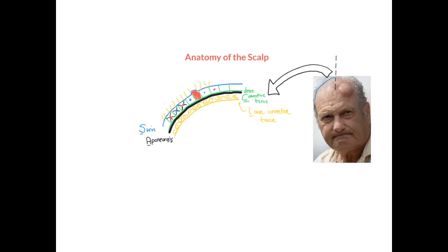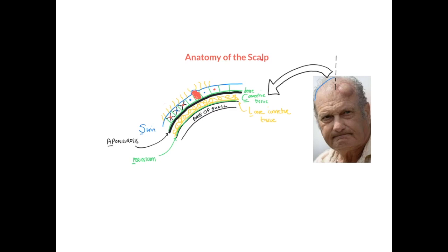The fifth and final layer of the scalp is the periosteum, which sits over the bone of the skull, the calvaria. Quite helpfully, the layers of the scalp can be remembered by the word SCALP: S for skin, C for dense connective tissue layer, A for aponeurosis, L for loose connective tissue layer, and P for periosteum. The first letters of each layer spell the word scalp.